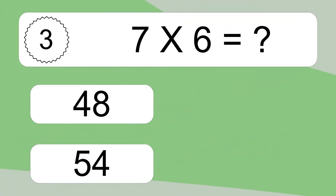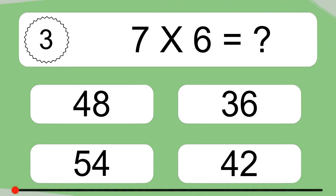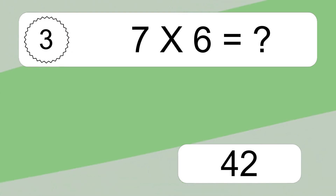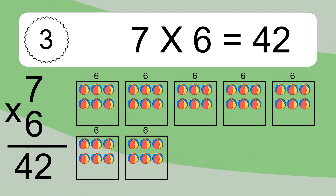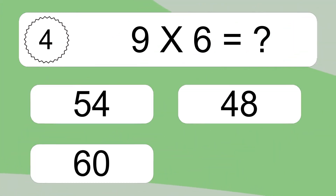Seven times six equals what? Seven times six equals 42. We have seven boxes and each box has six colorful balls inside. If you count all the balls in all the boxes together, you will have seven times six balls. This equals 42 balls.